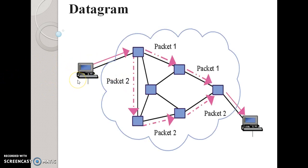In datagram, each packet is treated independently. All packets are put on the network but each is treated independently. Packets can take any route — for example, packet one may go one way and packet two another way to reach the destination. Packets may arrive out of order — for example, packet one, then packet seven, then packet five, then packet two, in any order. Packets may also go missing. It is up to the receiver to reorder packets and recover from missing packets.